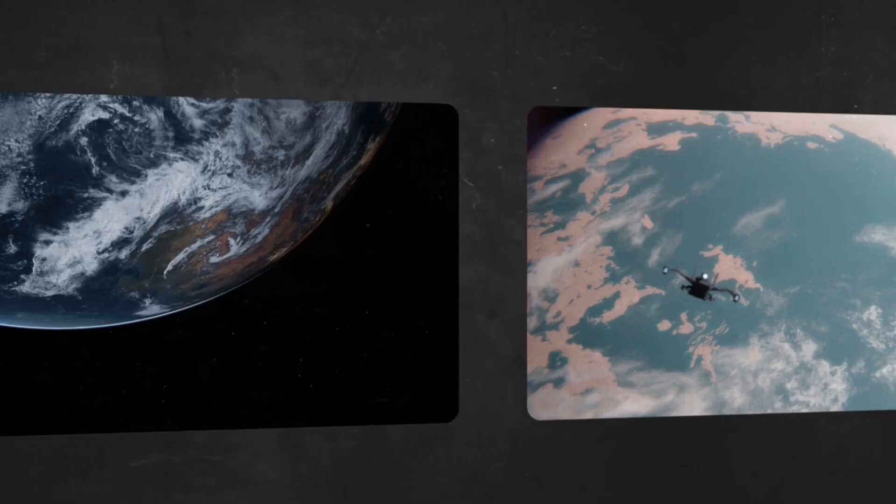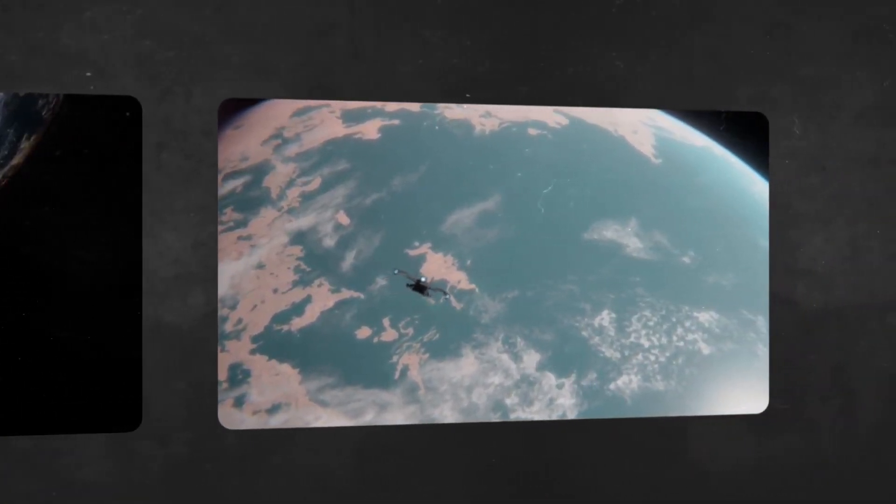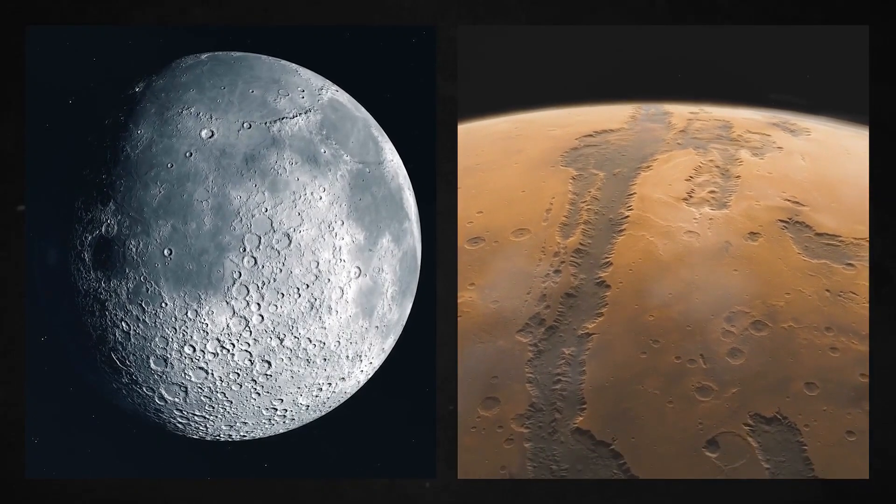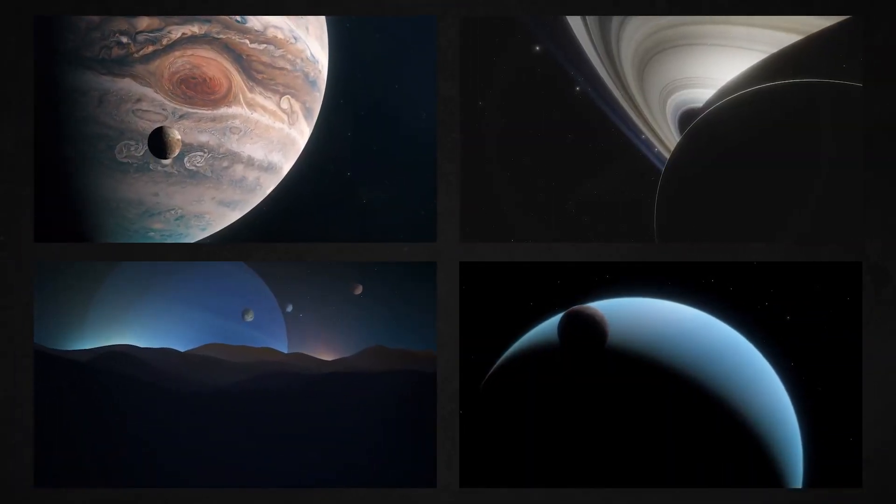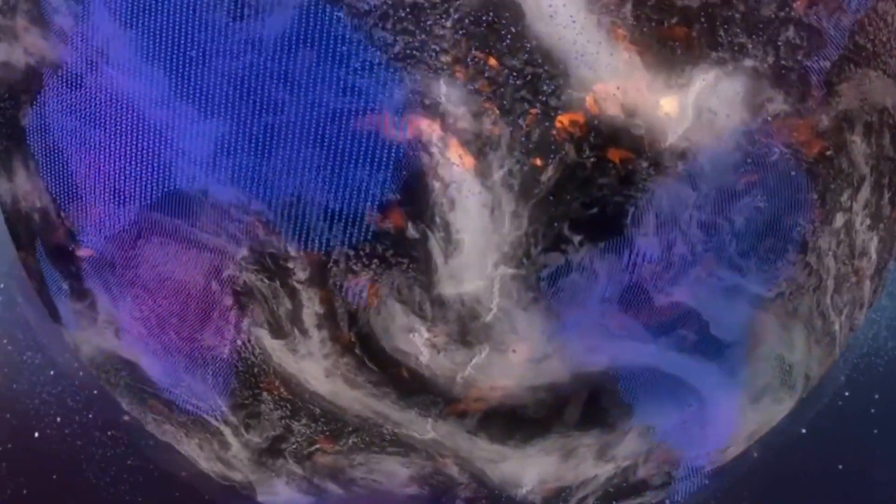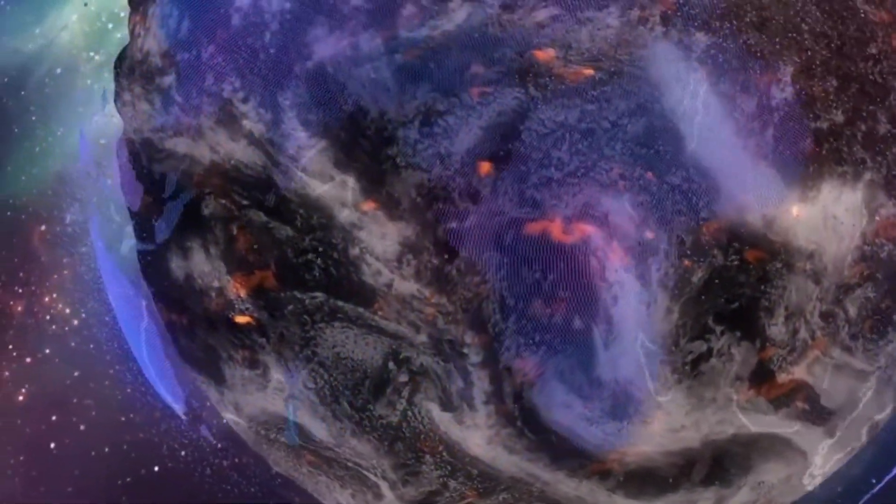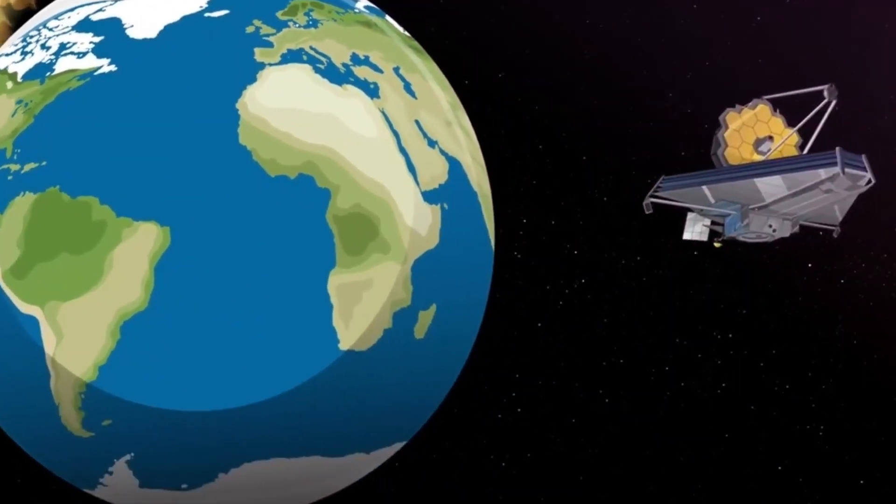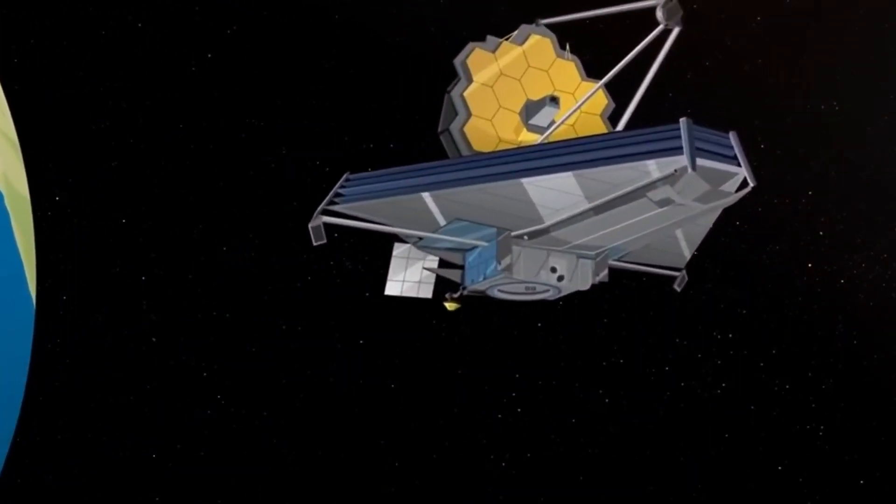A metal record resembling a photograph was among the earliest items launched into space by humans. The records, along with the reading needle, were carried by the Voyager 1 and 2 spacecraft that departed from Earth in 1977. These records featured images and sounds of life on Earth. Who knows if someone will one day hear it?